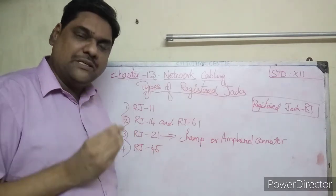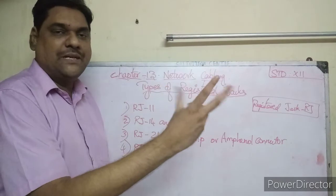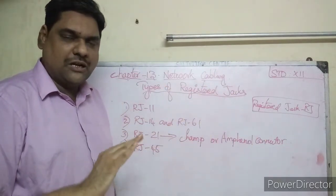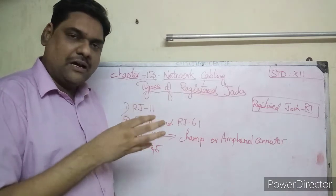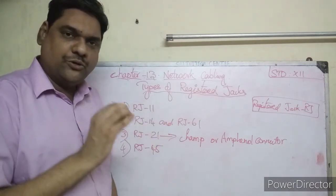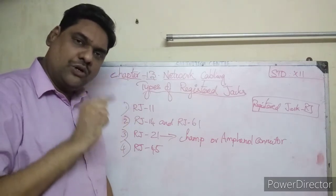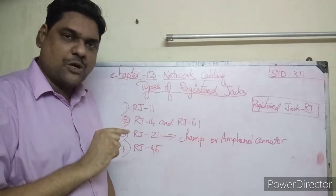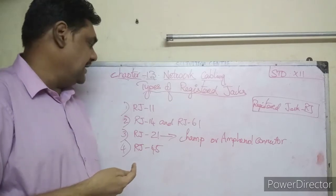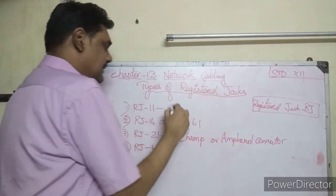In the RJ-11 six-pin connector, two pins are reserved for transmission, two pins are used for receiving, and two pins are reserved. So there are two pairs: two pins form one pair with a positive terminal, and two pins form another pair with a negative terminal. It is used mainly for telephone communication.